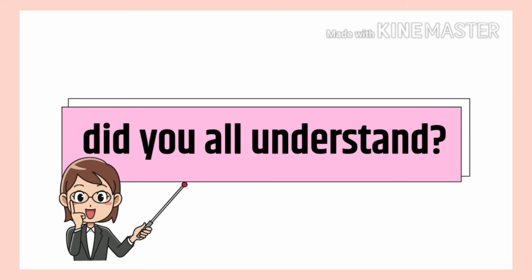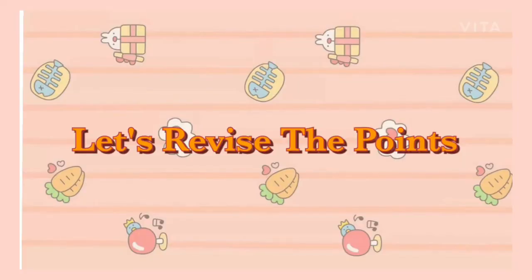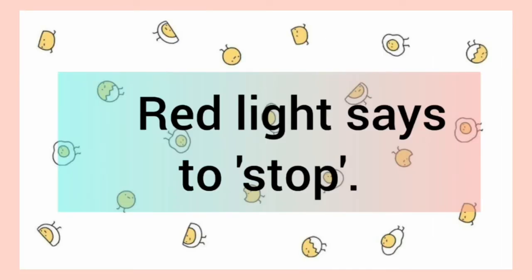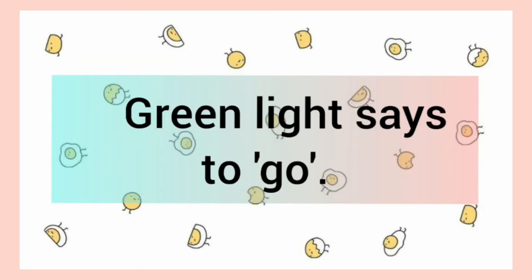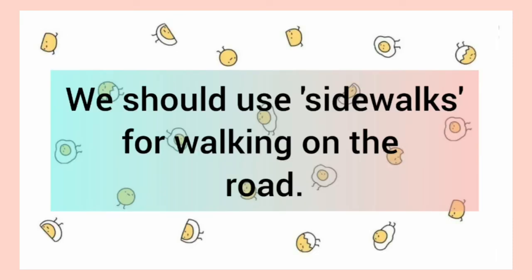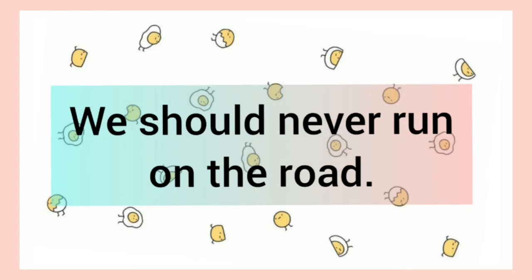Did you all understand the road safety and traffic rules? Always follow the rules. Let's revise: red light says to stop, yellow light says to wait, green light says to go, we should use sidewalks for walking on the road, we should use zebra crossing or pedestrian crossing for crossing the road, and we should never run on the road.